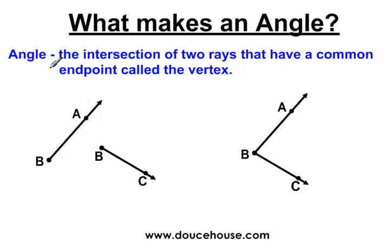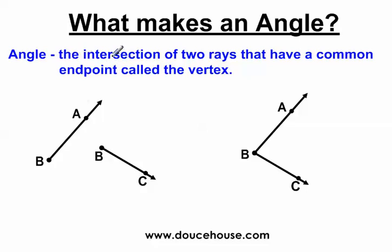The definition I use in my class is: the intersection of two rays that have a common endpoint called the vertex. We're going to focus on just the words from 'the' all the way to 'endpoint' — it's the intersection of two rays that have a common endpoint.